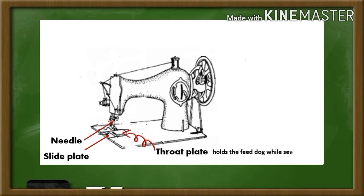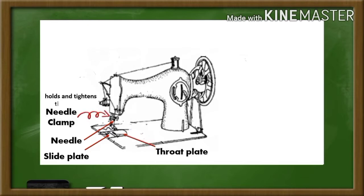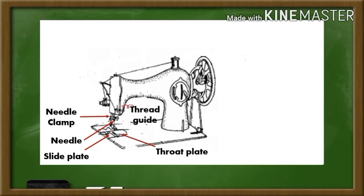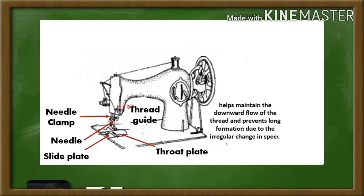Throat plate. The throat plate holds the feed dog while sewing. Next, needle clamp. It holds and tightens the needle. Take-up lever. It helps maintain the downward flow of the thread and prevents lock formation due to irregular changes in speed while sewing.